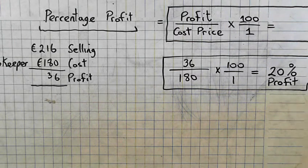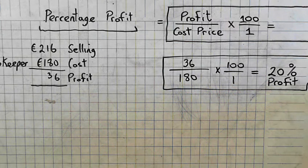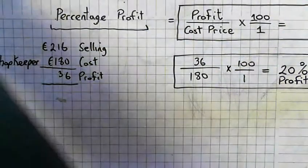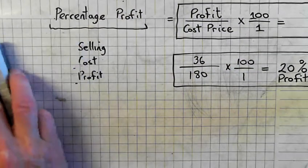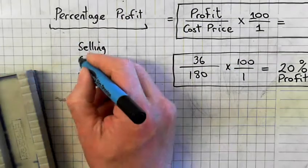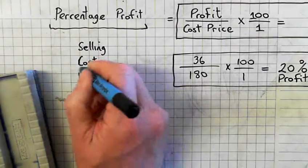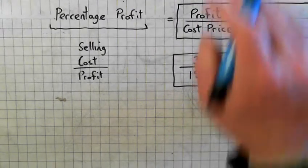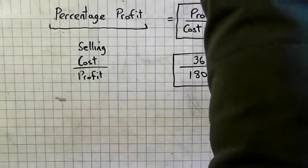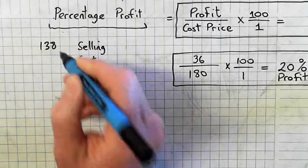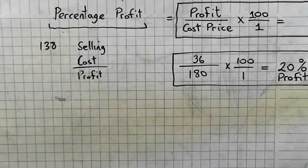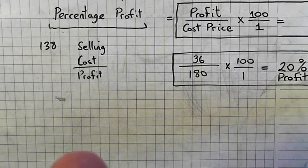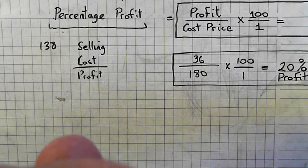So you have to see whether it's a profit or a loss, 20% profit. We'll look at another one. By selling the jacket for €138, that's the selling price, a store makes a profit of 15% on the cost price. Let's find what the store paid for the jacket.